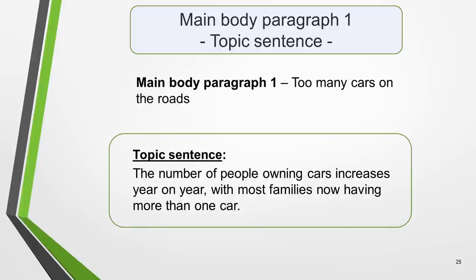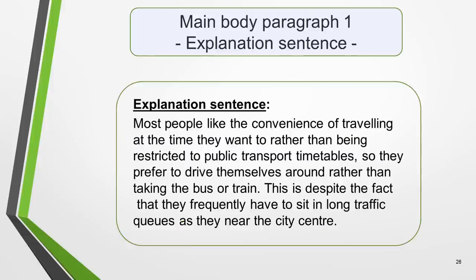If you maintain a clear development of ideas throughout your essay, you'll get high marks for task achievement and cohesion and coherence. We'll now take the idea for our first main body paragraph and create our topic sentence. The main idea is too many cars on the roads. So our topic sentence could be: The number of people owning cars increases year on year, with most families now having more than one car. Next, we must write an explanation sentence that develops the idea: Most people like the convenience of travelling at the time they want to, rather than being restricted to public transport timetables. So they prefer to drive themselves around rather than taking the bus or train, despite the fact that they frequently have to sit in long traffic queues as they near the city centre.